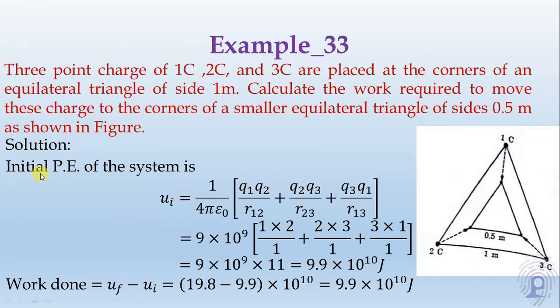The initial potential energy of the system is ui equals 1 divided by 4 pi epsilon times the sum: Q1 Q2 divided by R12, plus Q2 Q3 divided by R23, plus Q3 Q1 divided by R13. This is charge divided by distance for each pair. There are three interactions. The value is 9.9 into 10 to the power 10 joules.